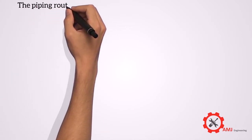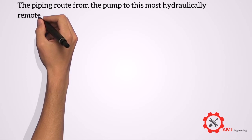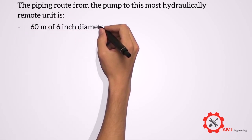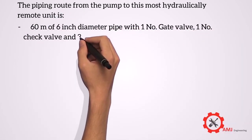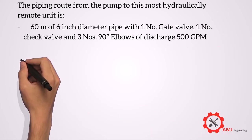The piping route from the pump to this most hydraulically remote unit is 60 meters of six inch diameter pipe with one gate valve, one check valve and three 90 degree elbows.